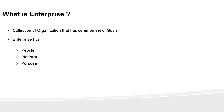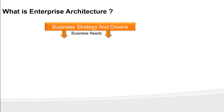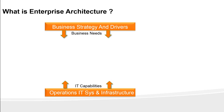Now let's look into enterprise architecture. All companies have a business strategy and an operating model, and this is what really generates business needs within the organization — also called business drivers. Organizations also have operations, IT systems, and infrastructure space, usually called the technology and operations division. This division supports the IT capabilities and operations of the organization.